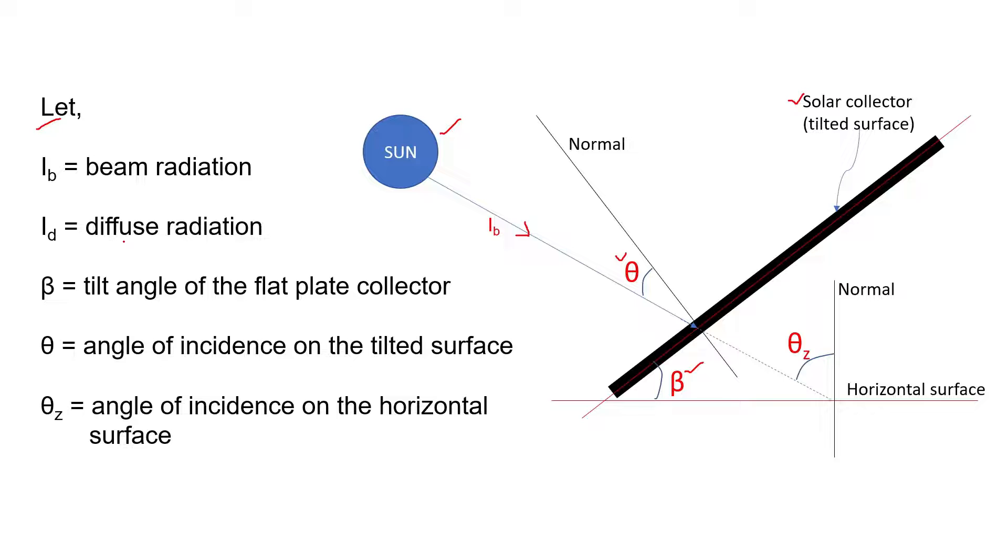Here Id is the diffuse radiation. Now we need to write down the information given about the diffuse radiation in the question. The diffuse fraction is given to be 30% of the total solar radiation.